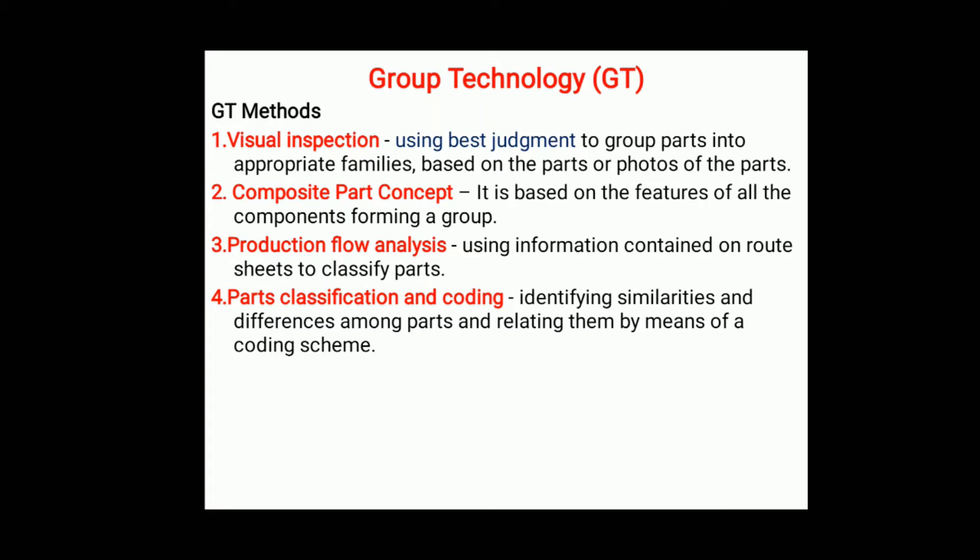The second method is the composite part concept. It is based on the features of all the components forming a group. Using the different shapes and sizes that are processed for a particular part, we identify the different parts and create separate groups. This is the second type of group technology method.